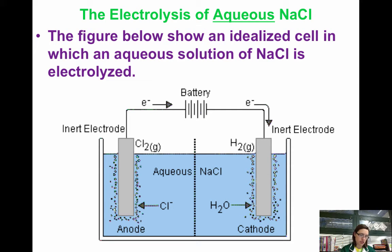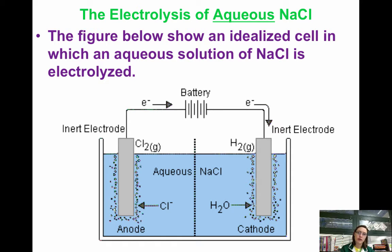We look at the reduction potential table to figure this out. As a general rule of thumb, no group 1 or group 2 metals will be reduced in aqueous solution. Instead, water will be reduced. That's what we see here — water being reduced at the cathode to H₂ gas.